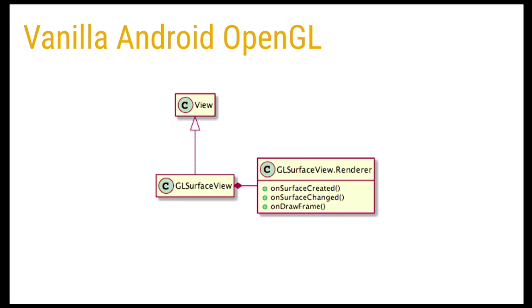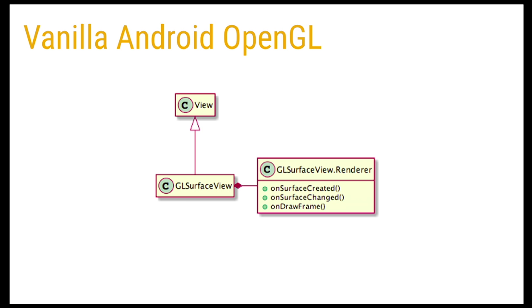So some practice — some actual code. We're going to start with vanilla Android OpenGL. The class diagram takeaway: GL surface view is an actual view — it inherits from View. The thing that actually draws to that view is a renderer, which is a subclass of GL surface view that you implement. You're going to be implementing onSurfaceCreated, onSurfaceChanged (mostly empty), and onDrawFrame. The action all happens in surface created and draw frame: surface created to initialize the pipeline, draw frame to take the data, shove it down there, and draw.